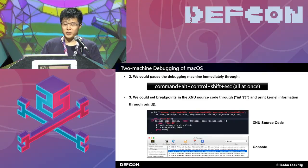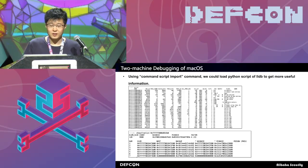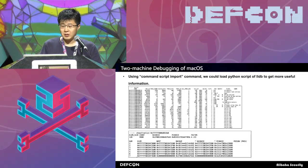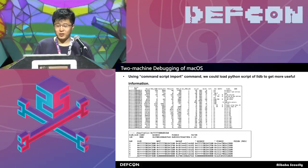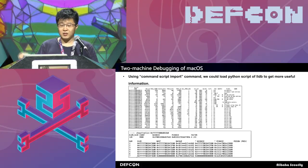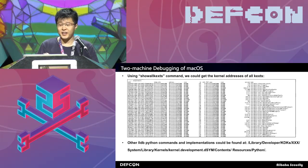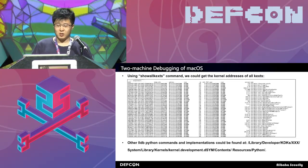We can also set breakpoints in the XNU source code through int $3 and print kernel information through printf. Note that if you use this method to debug the kernel, you need to recompile the kernel and then put it in the debug machine. Also, we can use the command script import to load the Python script in LLDB. It is very useful — this script helps get a lot of information about the kernel. For example, you can use it to print zone information and show the free list to show element information in the free list. There is another command called showallkexts which can get all the kernel addresses of kernel extensions. In addition, you can implement your own Python script — you can find some examples in the KDK's Python folder.